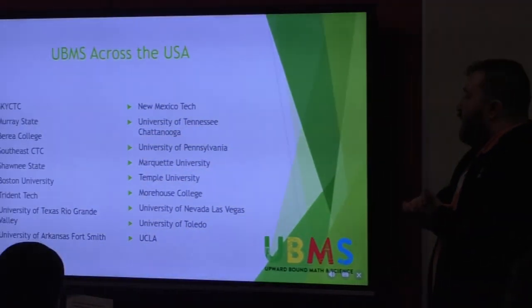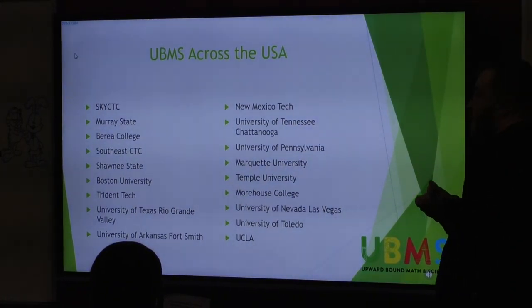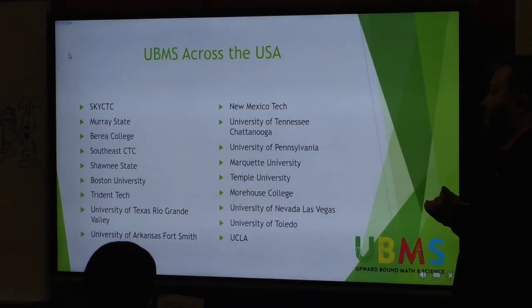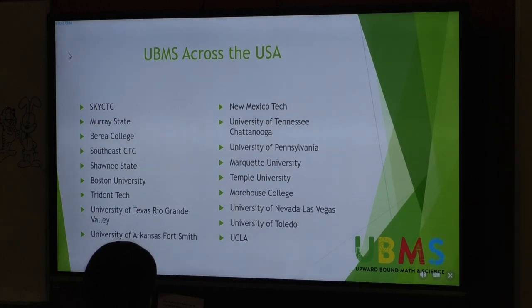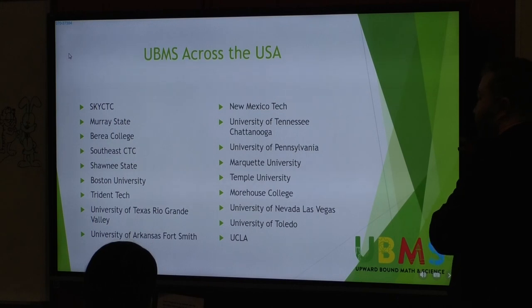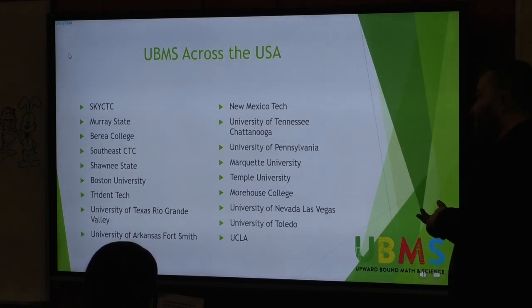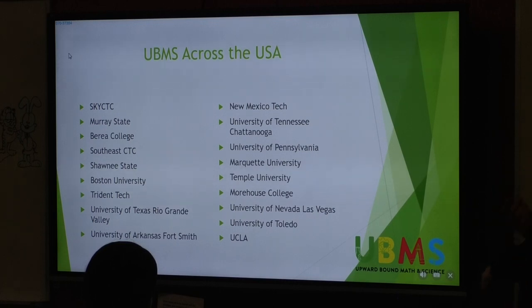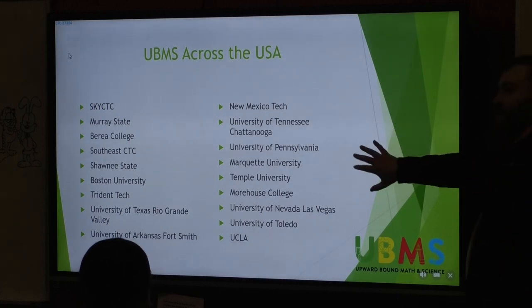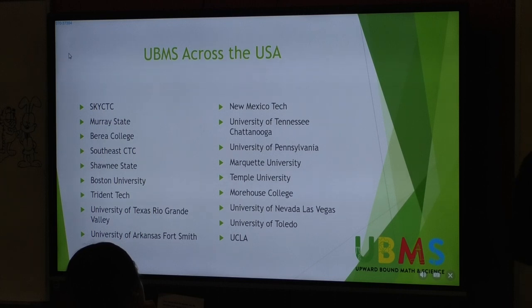Here's a list of some of the UBMS programs across the USA. You can see we range all over the place, all over the country, but some of the notable places that we have are Murray State, Shawnee State, Boston University, University of Tennessee and Chattanooga, University of Pennsylvania, which is an Ivy League school, Marquette University, Morehouse College, UCLA. The reach of UBMS is very real. It's a very legitimate program funded by the Department of Education and what we want to do is we want to help first-generation students be more prepared for college.